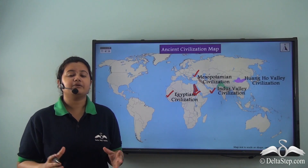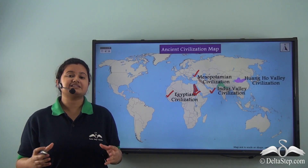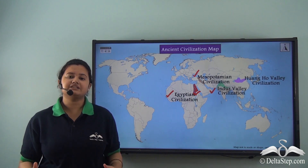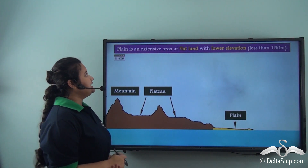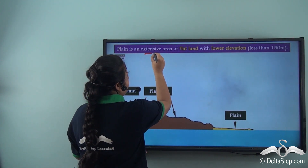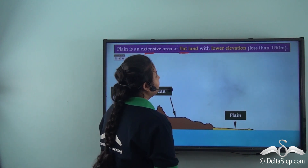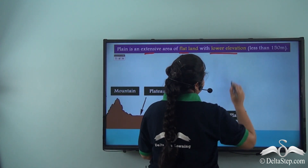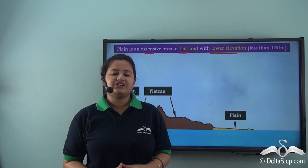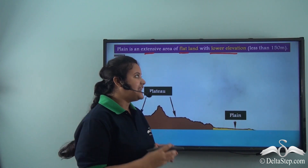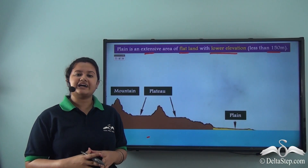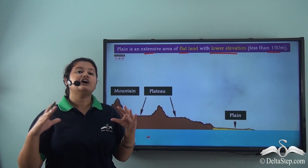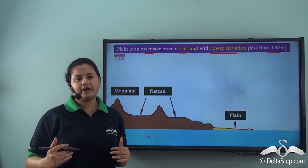Before discussing the importance of plains, let us define what a plain is. A plain is an extensive area of flat land with lower elevation. The average elevation of a plain is less than 150 metres. So, a plain is a type of landform which has flat land and lower elevation.